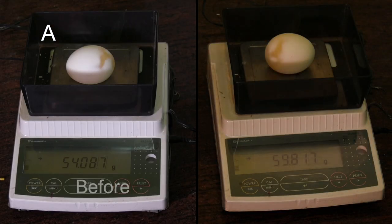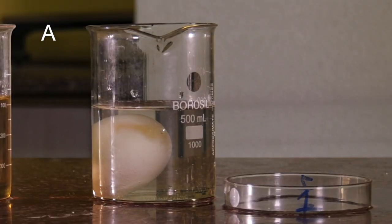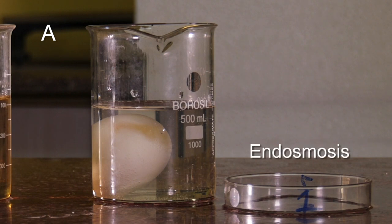The increase in weight is because of the water that has got inside the egg. Water is a hypotonic solution in respect of viscous substance density within the egg. The process of water entering the cell through the semi-permeable membrane is called endosmosis.